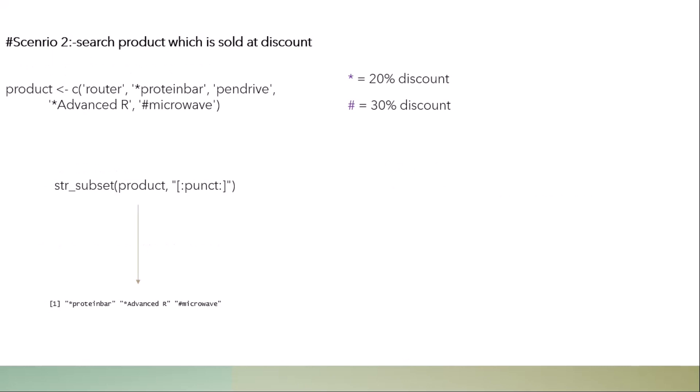This is scenario number three: finding products sold at a discount. Suppose you are a retail businessman like on Amazon and you sell many products. Here, a star symbol means 20% discount and another symbol means 30% discount. You can use the `str_subset` function with a regular expression to find all discounted products and get your answer.